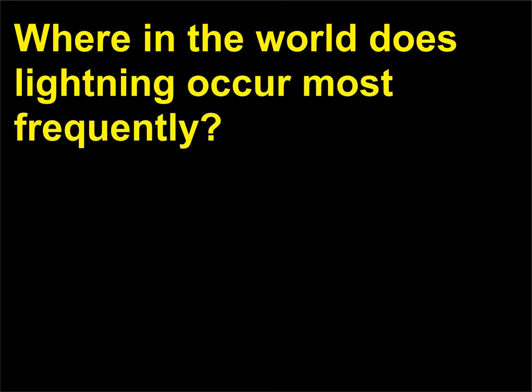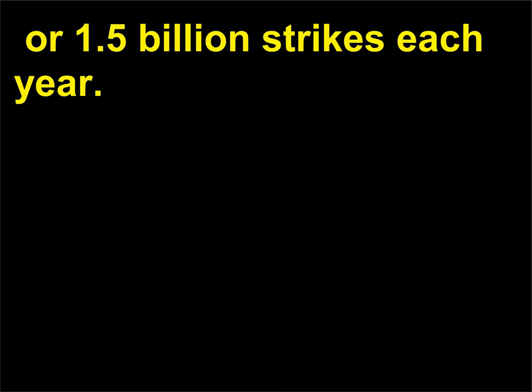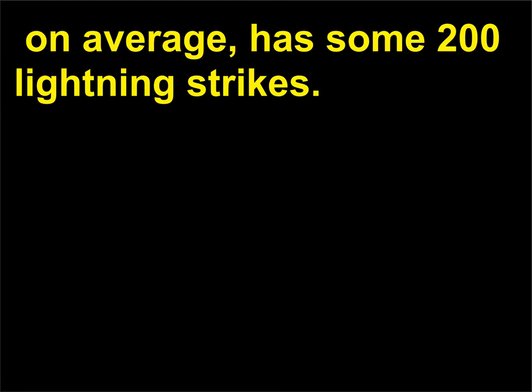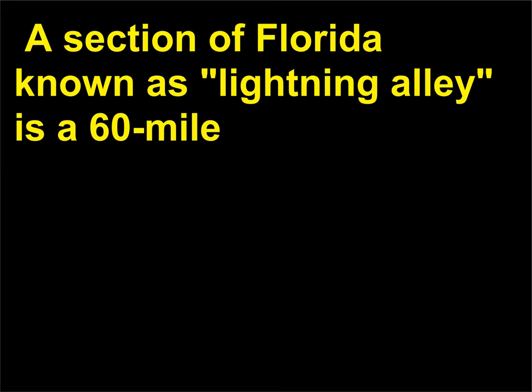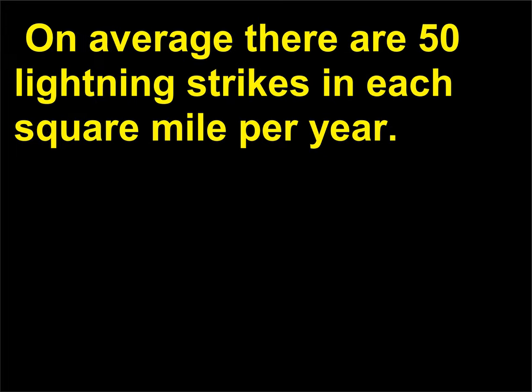Where in the world does lightning occur most frequently? Satellite lightning detectors show that over the entire Earth, lightning strikes about 45 times each second, or 1.5 billion strikes each year. In the eastern region of the Democratic Republic of the Congo in Africa, every year each square mile has on average some 200 lightning strikes. A section of Florida known as Lightning Alley is a 60-mile-wide hotspot of lightning activity in the United States, with on average 50 lightning strikes in each square mile per year.